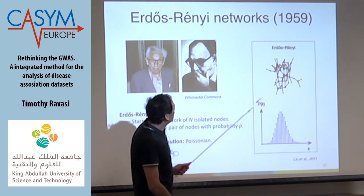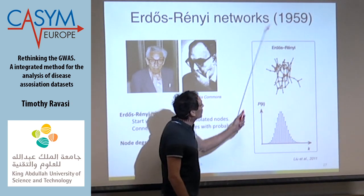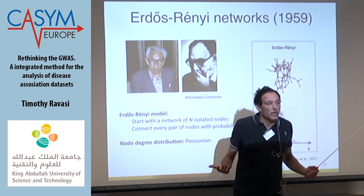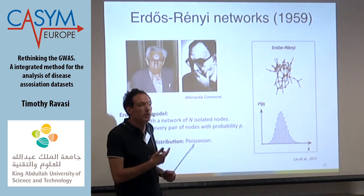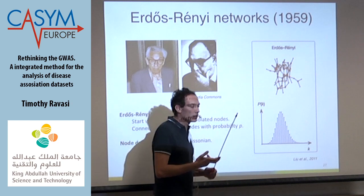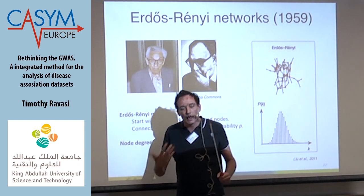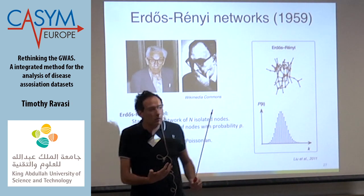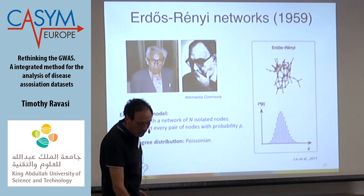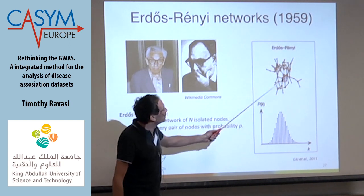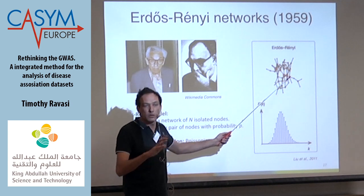The problem these very clever guys had was that back in 1959 they didn't have all the data we have now — not only biological data but also social data like the internet. So they couldn't properly test their model against real networks; they had to come up with a computational model instead.